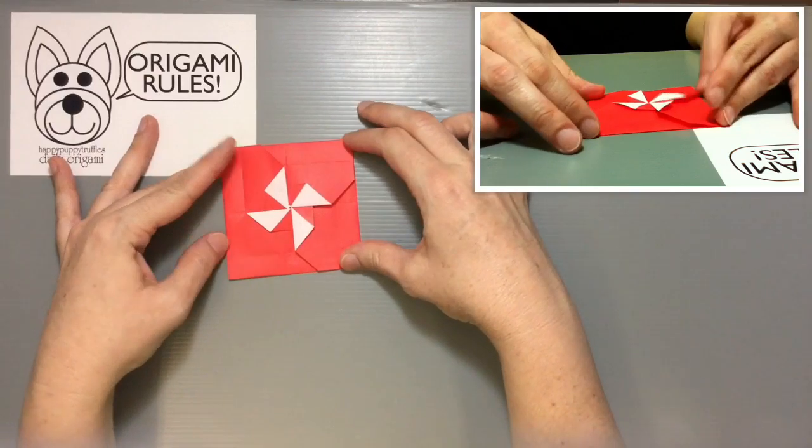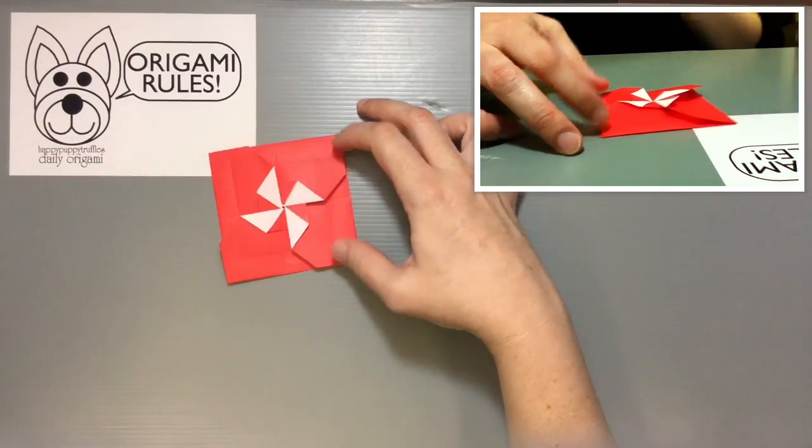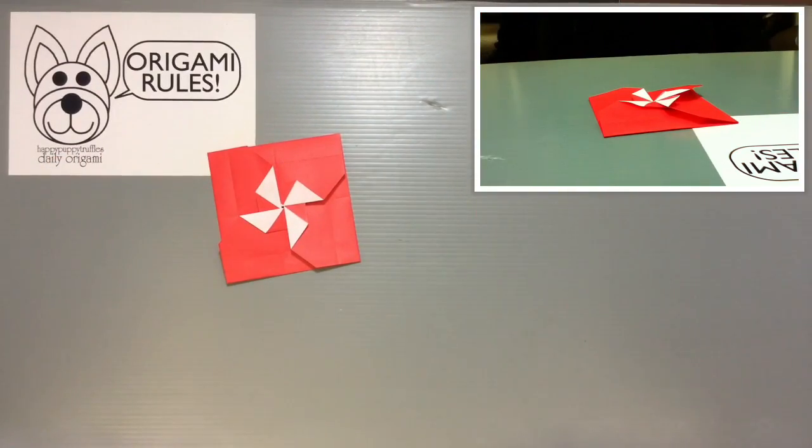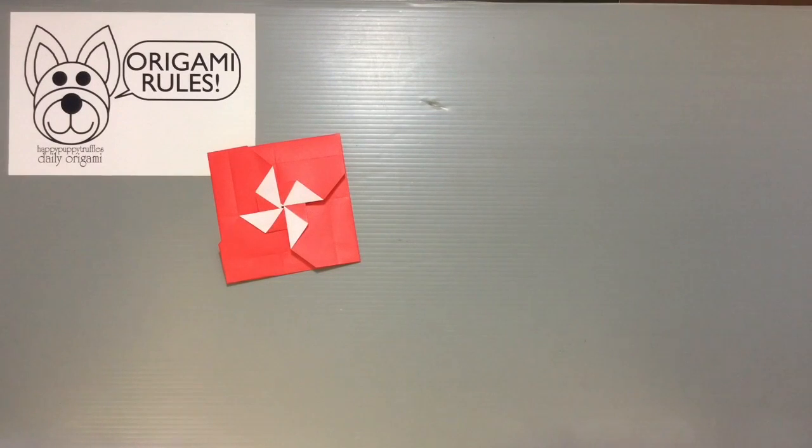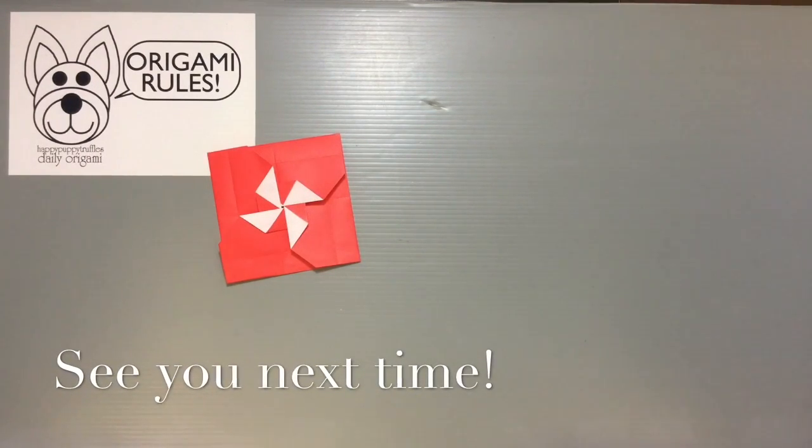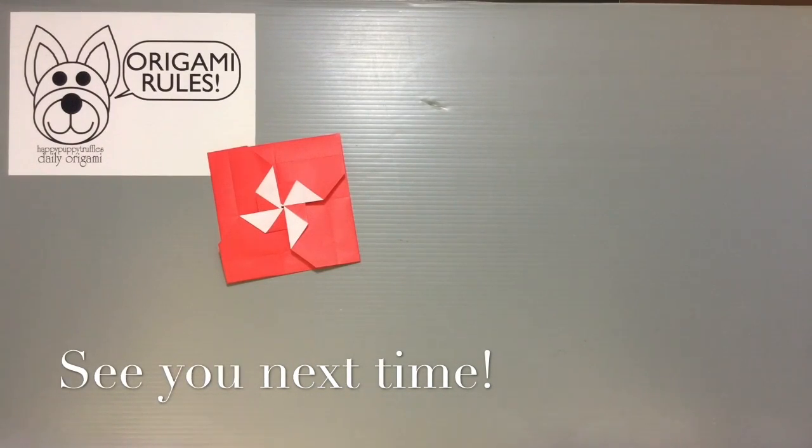When it lays flat, you get a nice pinwheel effect like this in the middle. That is how you make a traditional origami tato. I'll have more fun projects to share with you in the days to come. Thanks again for watching and I'll see you all next time. Bye!